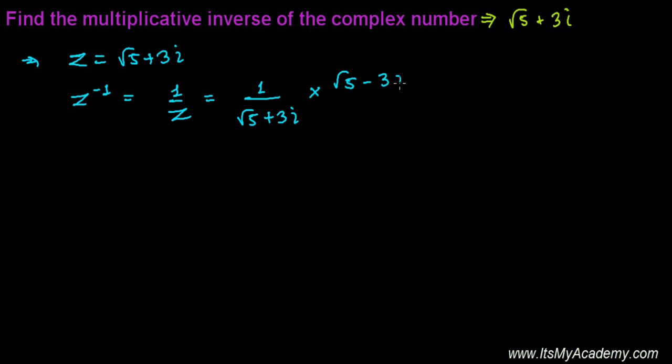You're going to get root 5 minus 3i divided by root 5 minus 3i. Now it's a plus b times a minus b, so it's a square minus b square.